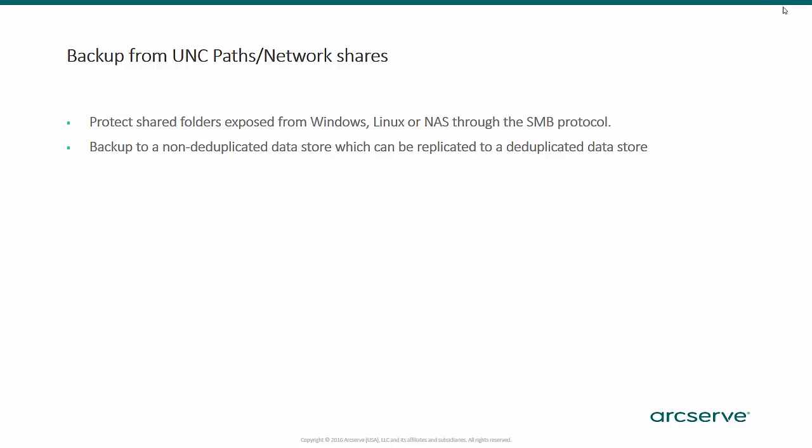ArcServe UDP 6.5 is now capable of protecting SMB and CIFS shares exported by Windows, Linux, and NAS devices. Backup to a non-deduplicated store which can be replicated to a deduplicated data store. This provides a unified user experience as agent-based backup and host-based backup, leveraging dedupe data stores where the data can be replicated to — replication, assured recovery, copy to tape, and other features in UDP to protect their data better.